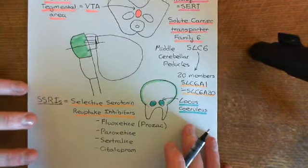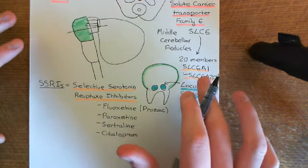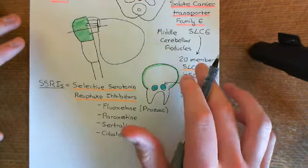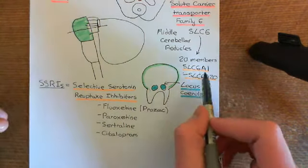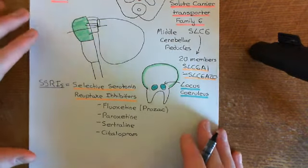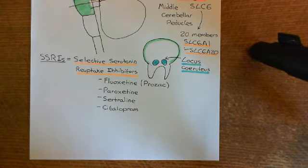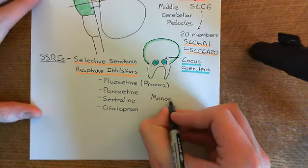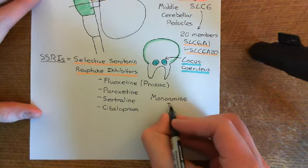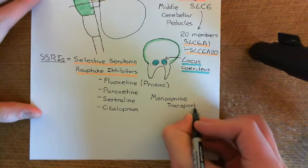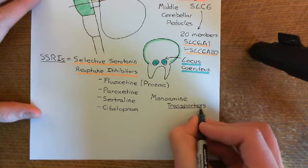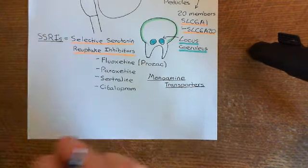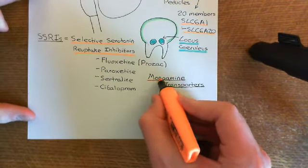You can divide these 20 members of the SLC6 family into separate subfamilies. One of the key subfamilies is the monoamine transporters. In fact, this SLC6 family actually contains three transporters for the three different monoamines - it doesn't just contain a transporter for serotonin, but also a transporter for dopamine and also for noradrenaline. We'll need the transporter for noradrenaline in a moment when we go on to some of the other antidepressants.